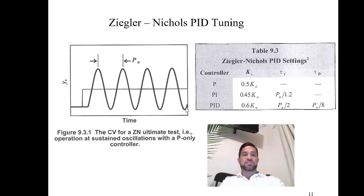And now once you've determined the ultimate gain and the ultimate period, you can then calculate your P, PI, or PID settings depending on the mode of operation of the controller.